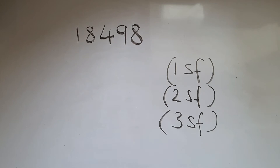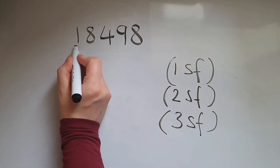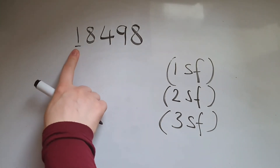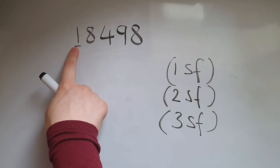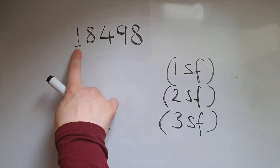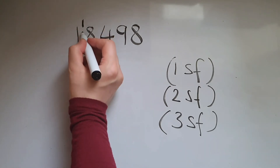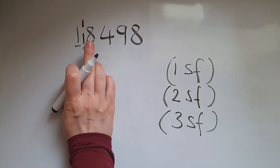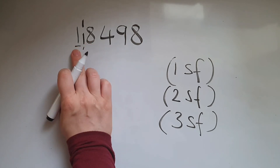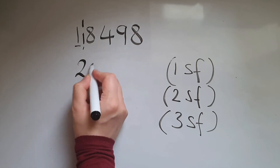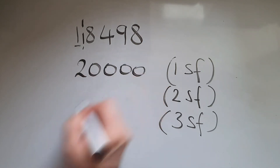Let's round 18,498 to one significant figure. The first significant figure is the first digit, which has a value of 10,000. So we're going to round the number to the nearest 10,000. Looking at the digit immediately on its right, we've got 8, so that means we're going to round this up to 20,000.